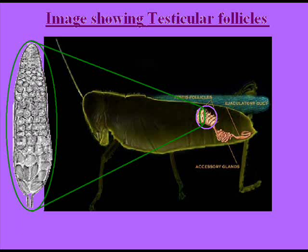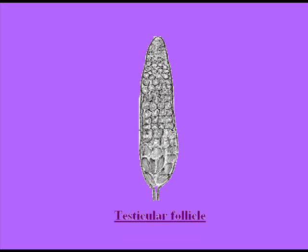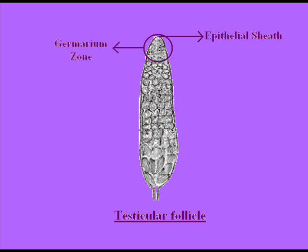Here the image shows the testicular follicles enlarged and magnified, showing the testicular follicle structure. The first part or covering of the testicular follicle is the epithelial sheets. The first zone or phase of the testicular follicle is the germarium zone.